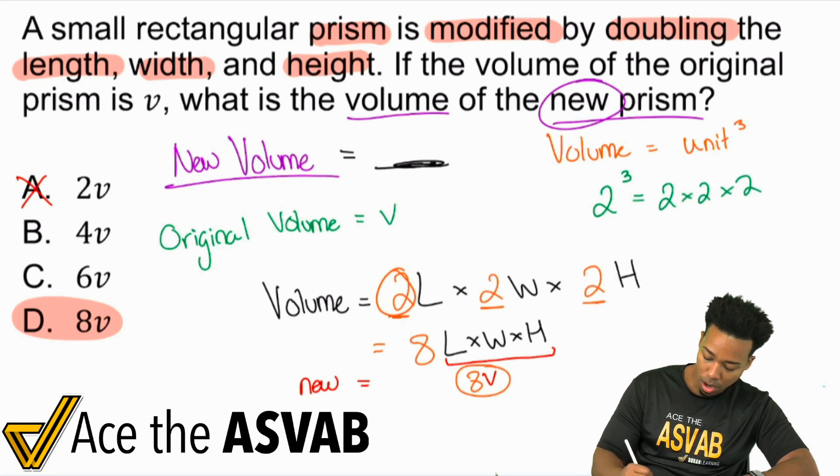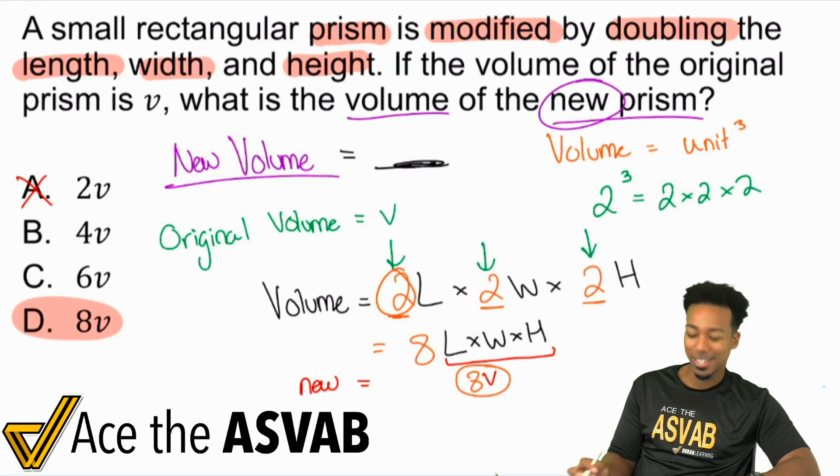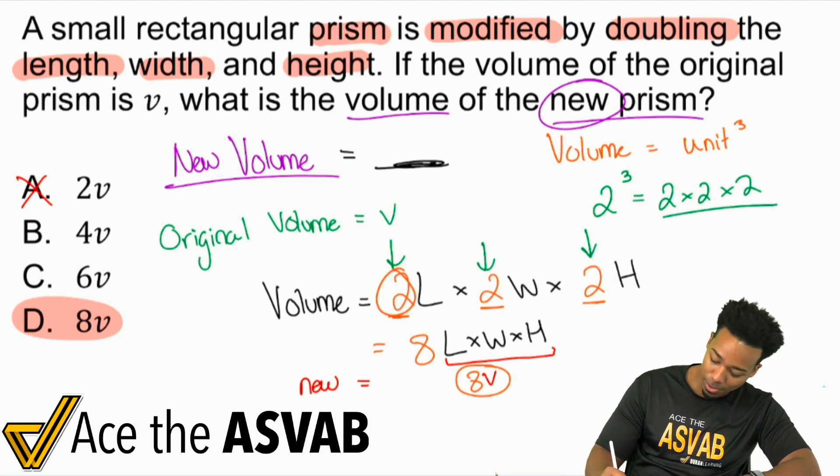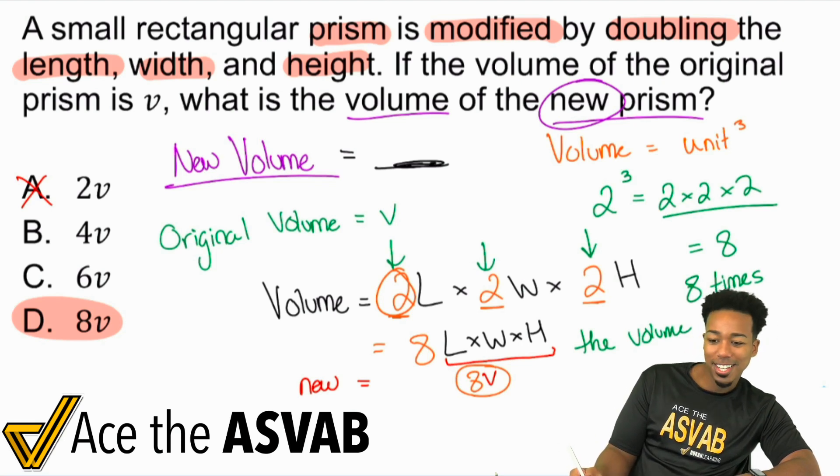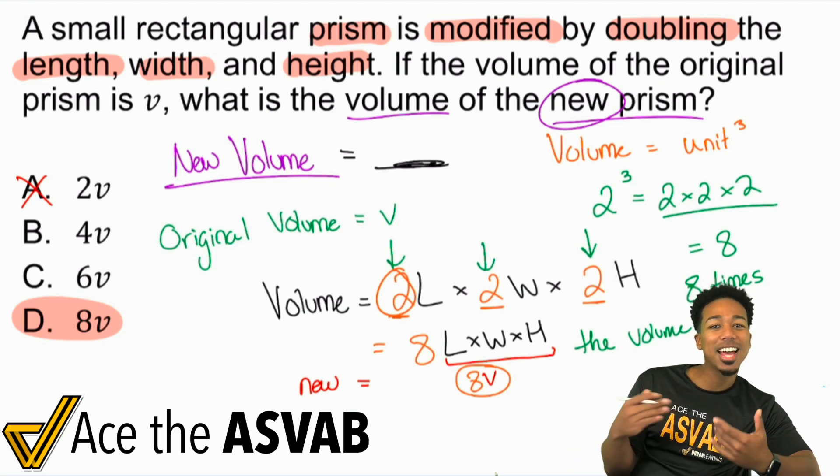And two to the power of three is two times two times two. Oh, does that look familiar? All three dimensions got multiplied by two, and so two times two times two is eight. So you have eight times the volume. And look at that, my big old head did not get in the way. We're feeling pretty good there.